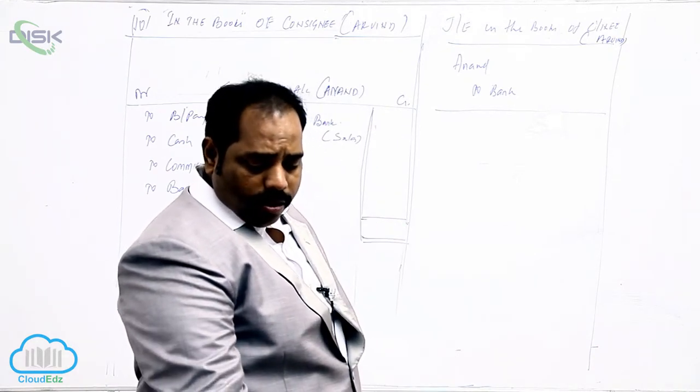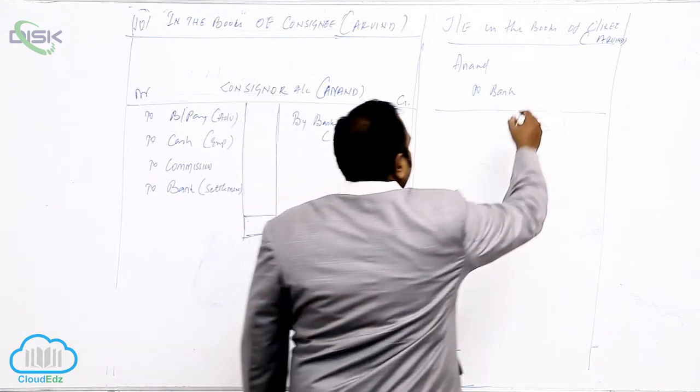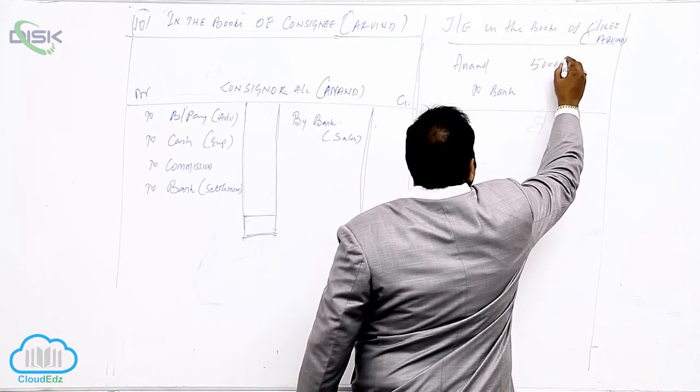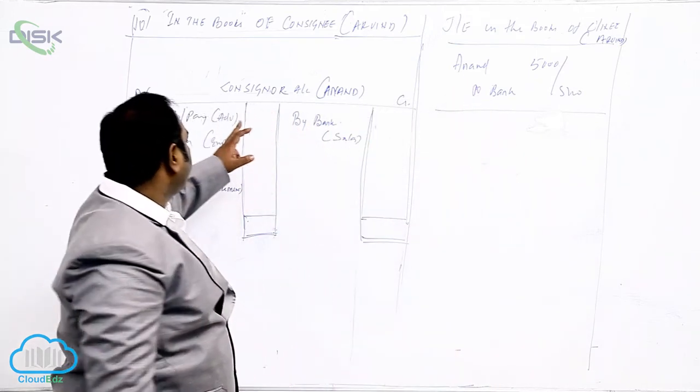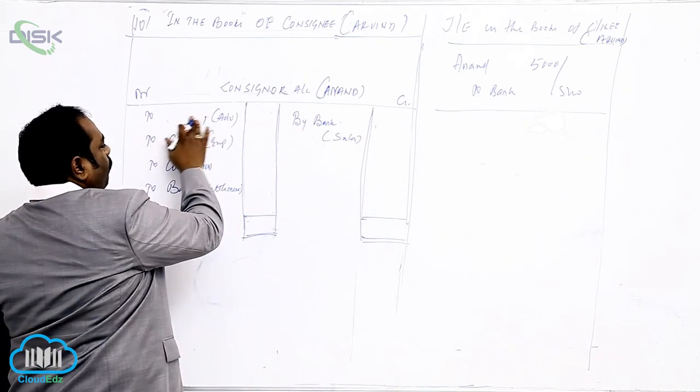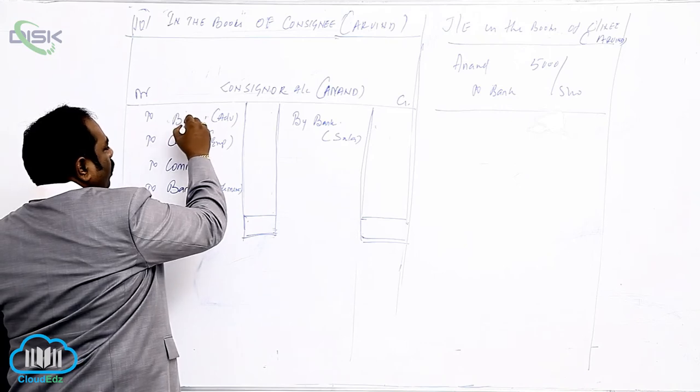So how much is the advance we are given? 5,000. 5,000 as advance. Anand account, not the bank. In Anand account, what we will write? Instead of writing bills payable, what we will write? To bank. Because we are...